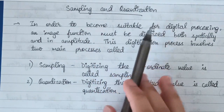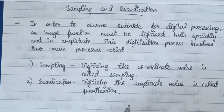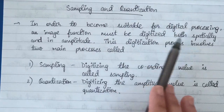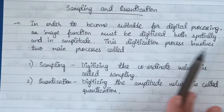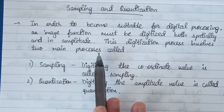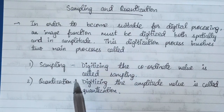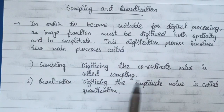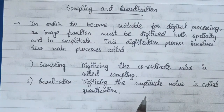In order to use an image we need to convert it from an analog image to a digital image — that is when the computer can use it. So in order to make an image suitable for digital processing, an image function must be digitized both spatially and in amplitude. This digitization process involves two main processes: sampling, which is digitizing the coordinate value, and quantization, which is digitizing the amplitude value.